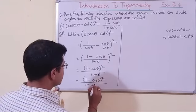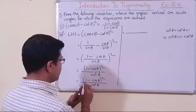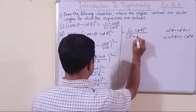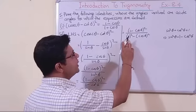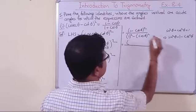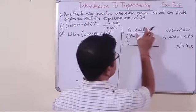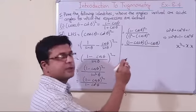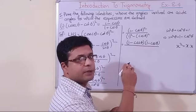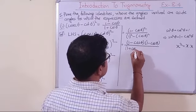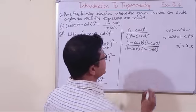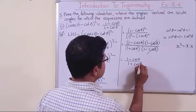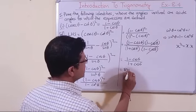So this equals (1 - cos θ)² / (1 - cos²θ). Now 1 - cos²θ can be expressed in the form a² - b², which is (1 + cos θ)(1 - cos θ). So we have (1 - cos θ)² divided by (1 + cos θ)(1 - cos θ). We can cancel the (1 - cos θ) terms, and what remains is (1 - cos θ)/(1 + cos θ), which is the right hand side. So this identity is proved.